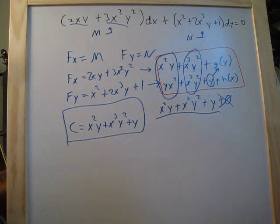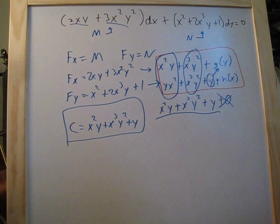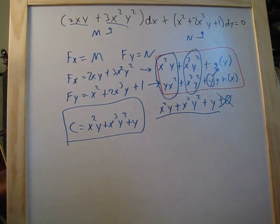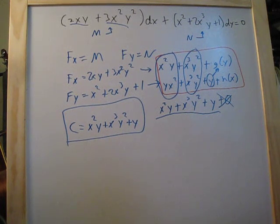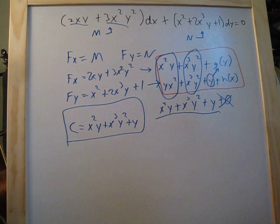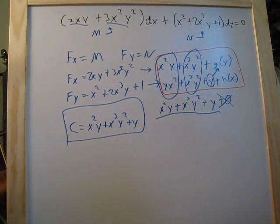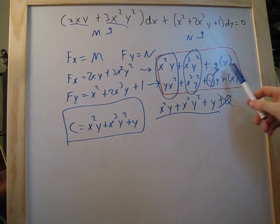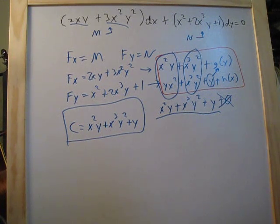To recap: first, call the left side of the equation M and the right side N. Second, differentiate M with respect to y to get M_y, and differentiate N with respect to x to get N_x. Third, check if M_y equals N_x — if they match, the equation is exact and we can proceed. Fourth, integrate M with respect to x and integrate N with respect to y.